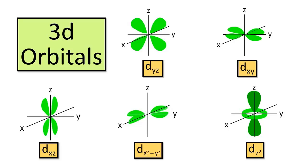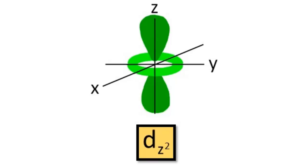Let's take a look at the d orbitals, which are found in the third principal level and beyond. Four of the five d orbitals are shaped like clover leaves and have four lobes of electron density around the nucleus and two perpendicular nodal planes. In my opinion, the most interesting d orbital is the dz squared orbital, which has two lobes oriented along the z axis and a donut-shaped ring along the xy plane.